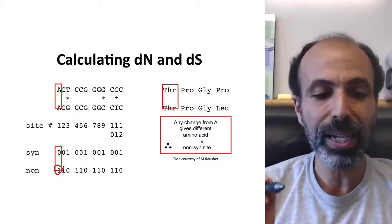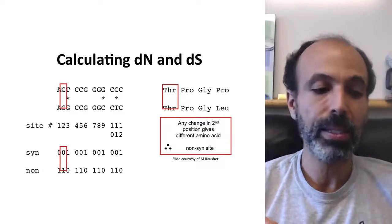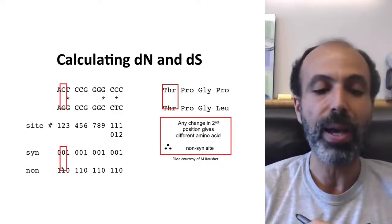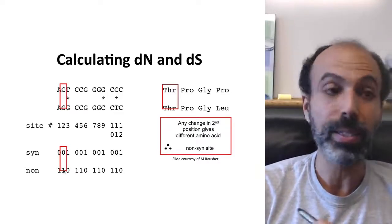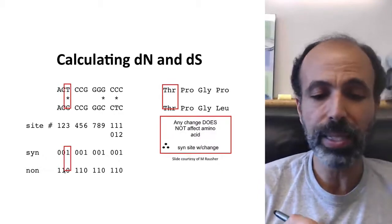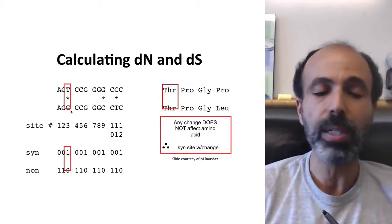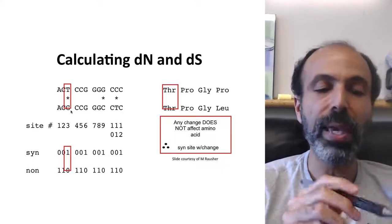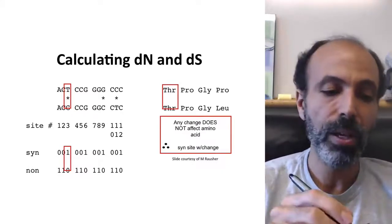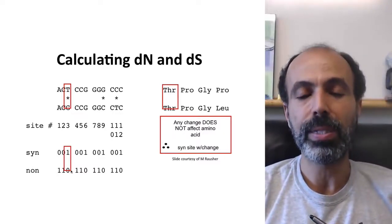As I mentioned before, all second positions are non-synonymous sites. Any second position change will change the amino acid. So this is definitely a non-synonymous site. The third position in this case is a synonymous site. Because any change here, if it's T, G, it doesn't matter what it is. If you're starting with AC, any change there will not affect the amino acid. So that is a clear synonymous site.